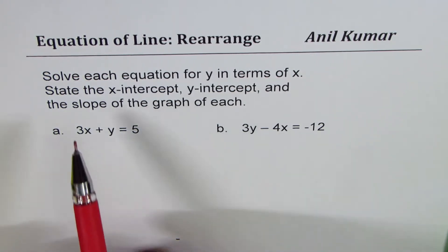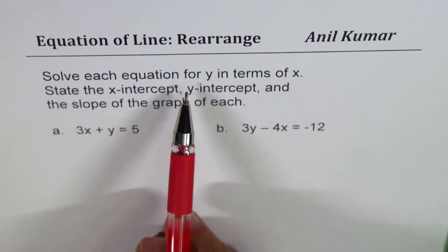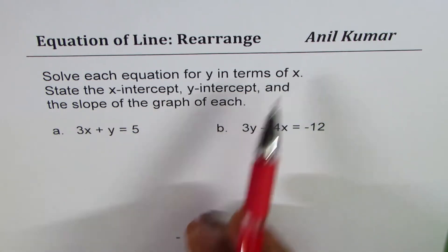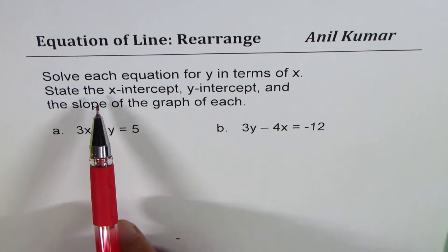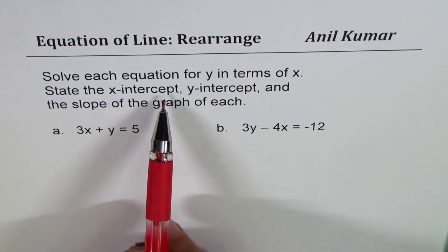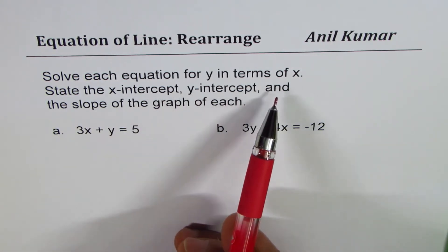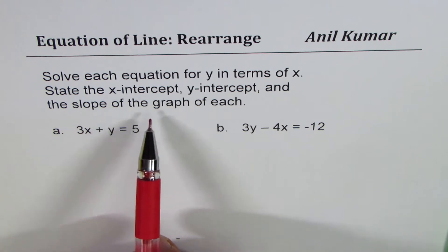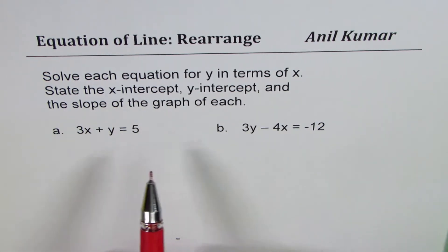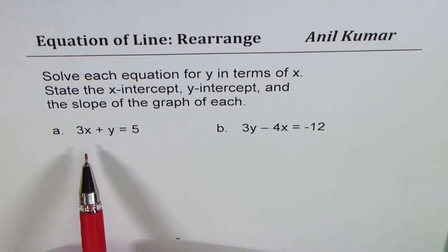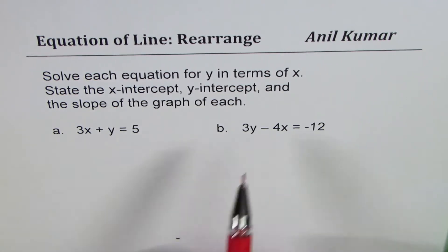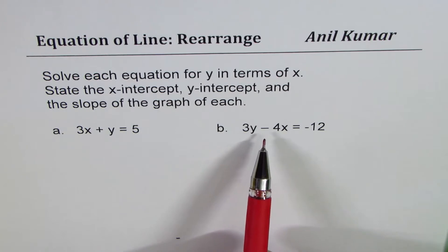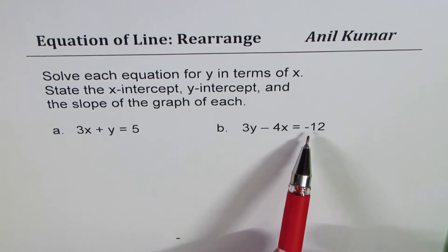The question here is solve each equation for y in terms of x. State the x-intercept, y-intercept and the slope of the graph of each. Now, we are given two equations here. They are 3x plus y equals to 5 and 3y minus 4x equals to minus 12.